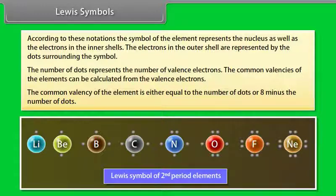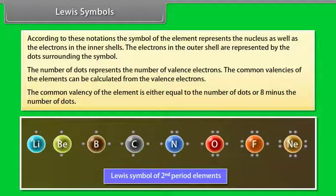For example, the common valencies of lithium, beryllium, boron, and carbon are 1, 2, 3, and 4 respectively. While those of nitrogen, oxygen, fluorine, and neon are 8 minus the number of dots — that is, 3, 2, 1, and 0 respectively.